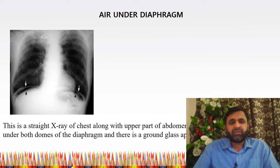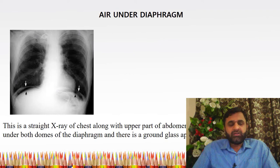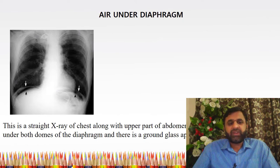A commonly encountered X-ray finding in the surgical department is air under the diaphragm. This X-ray film shows air under both diaphragms — a straight X-ray of chest along with the upper part of abdomen — showing free gas under both domes of the diaphragm, and there is a ground glass appearance in the abdomen.